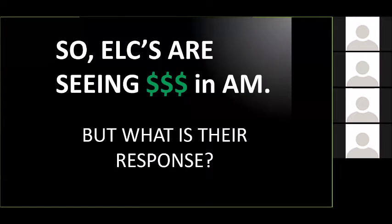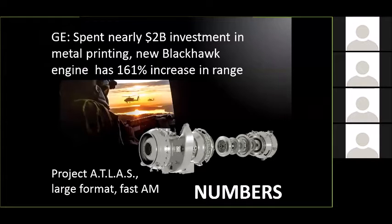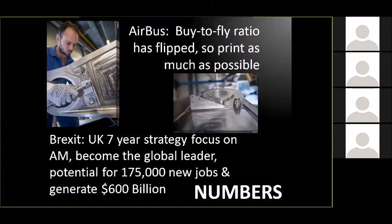Previously, companies were looking at additive as making key chains — they see them in schools and think it's cool, but they don't think about money. The ELCs are making strides. GE's data shows their new engine project could potentially increase the Blackhawk helicopter's range by 161% — double the range — because of additive manufacturing technology, and this is production stuff. Airbus says their buy-to-fly ratio is flipped; it costs them less to produce things, so they want to print as much as possible. Even the UK's published seven-year post-Brexit strategy included a real push toward additive, with revenues potentially up to $6 billion from this move.